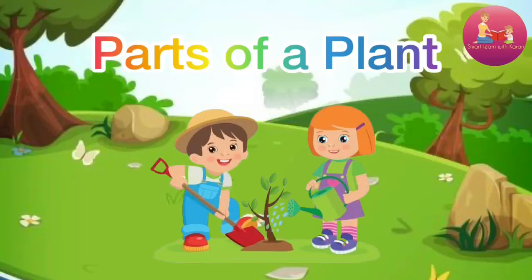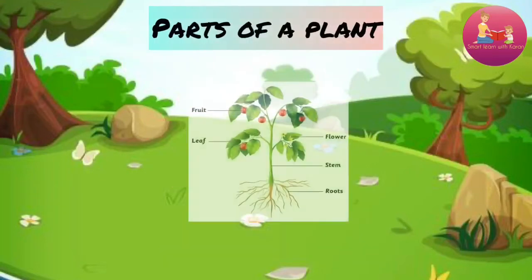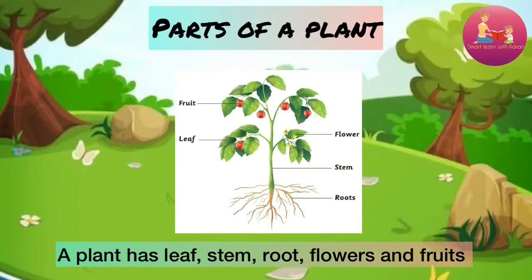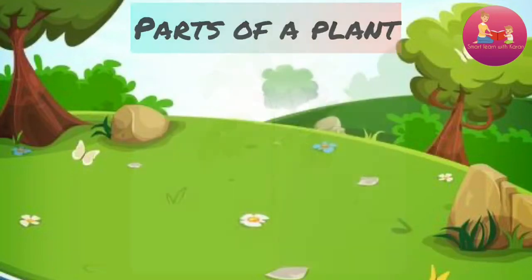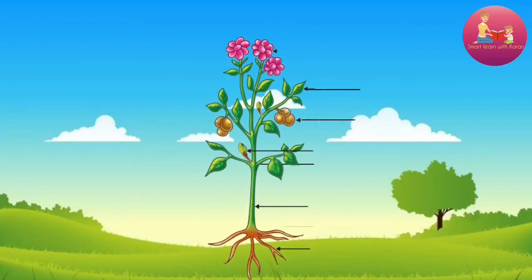Parts of a plant. A plant has leaves, stem, root, flowers and fruits.